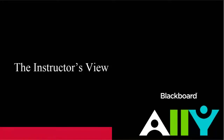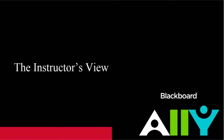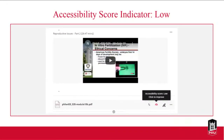Let's look at the instructor view of encountering Blackboard Ally in your Blackboard course, and then the student view. Here's an example of an accessibility score indicator next to a PDF file — it's red, meaning the accessibility score is low. You would click that accessibility icon to improve it and see the details shown previously.